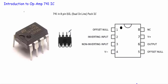This is the LM741 operational amplifier IC. It has a total of 8 legs. See on top of it, it has a hole — this will be our terminal 1, this will be our terminal 2, and this is our terminal 3 and this is our terminal 4.